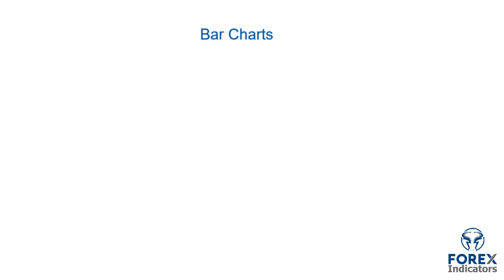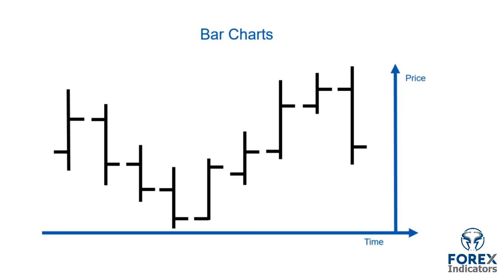Let's first take a look at a bar chart. In the example on the screen, we can see what a bar chart might look like on your trading software. The time scale and date is generally represented down the bottom on the horizontal axis, and the price scale is on the vertical or y-axis on the right-hand side. This will generally be the same no matter what type of chart you are using, whether it is a line chart, a bar chart, or a candlestick chart, as most software packages are set up this way.